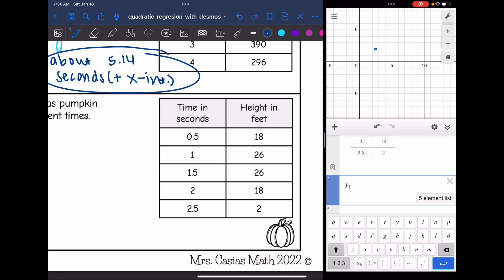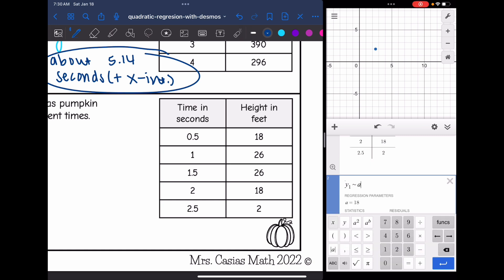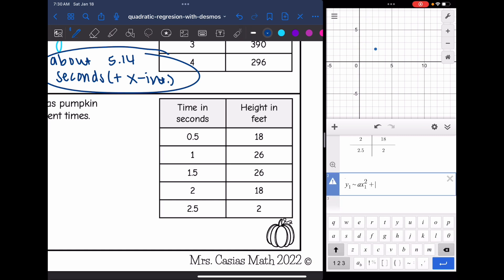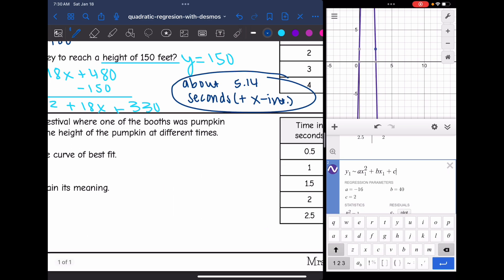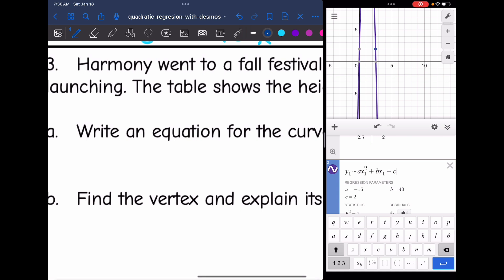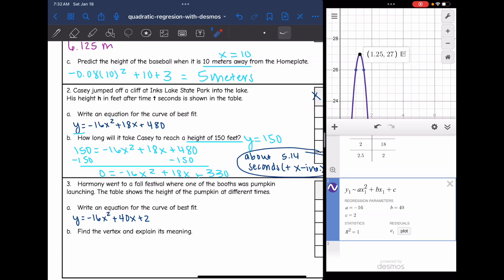So now I'm ready to type in my regression equation with x1 and y1. So I'm going to do y1 is about a times x1 squared plus b times x1 plus c. And there are the values for my regression equation. So I can write the curve of best fit. It'll be y equals negative 16x squared plus 40x plus 2.